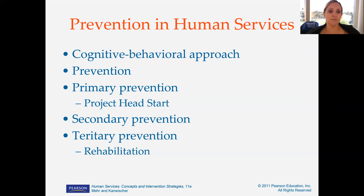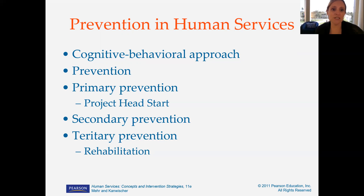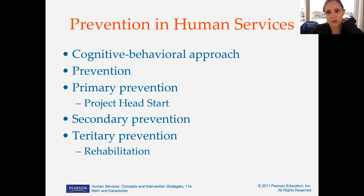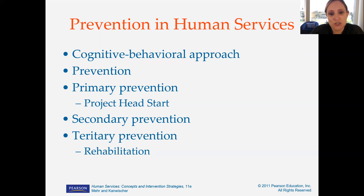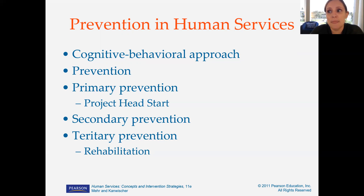There are three different levels of prevention that have been identified. Primary prevention — a good example is Project Head Start, which identifies children who could have difficulties in school later on and provides a program before school even begins to get them off to a great start. Then there's secondary prevention, and tertiary prevention, which would be like rehabilitation — getting the person back into doing things in ways that are more ideal or a better fit for them.